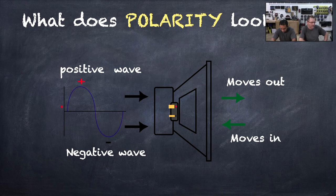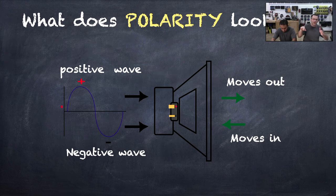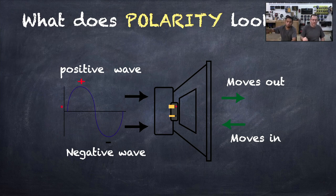What does that look like? Looks like this. If you have a sine wave creating a positive wave, then it creates a negative wave. On your amplifier, you'll have a positive output and a negative output.